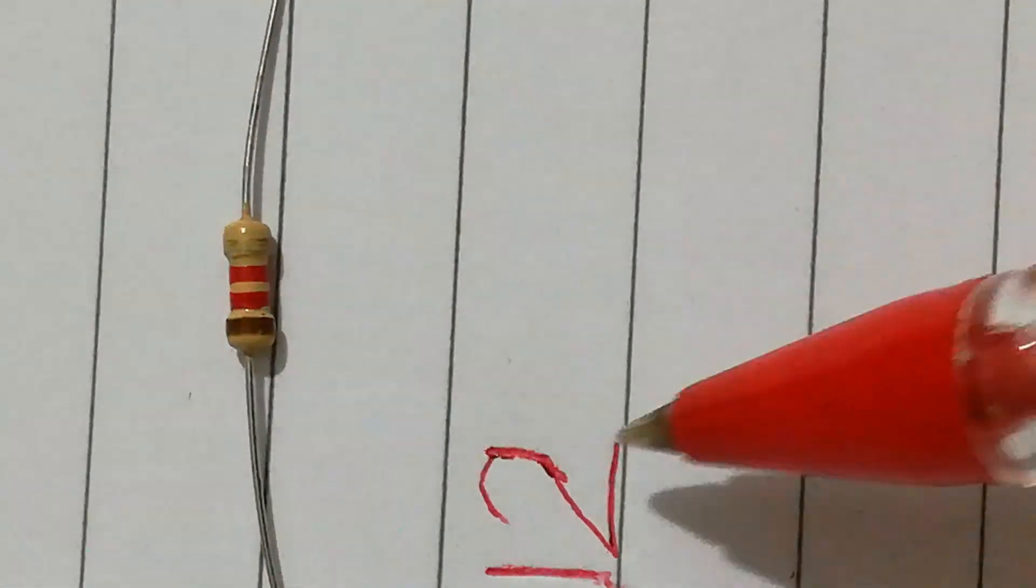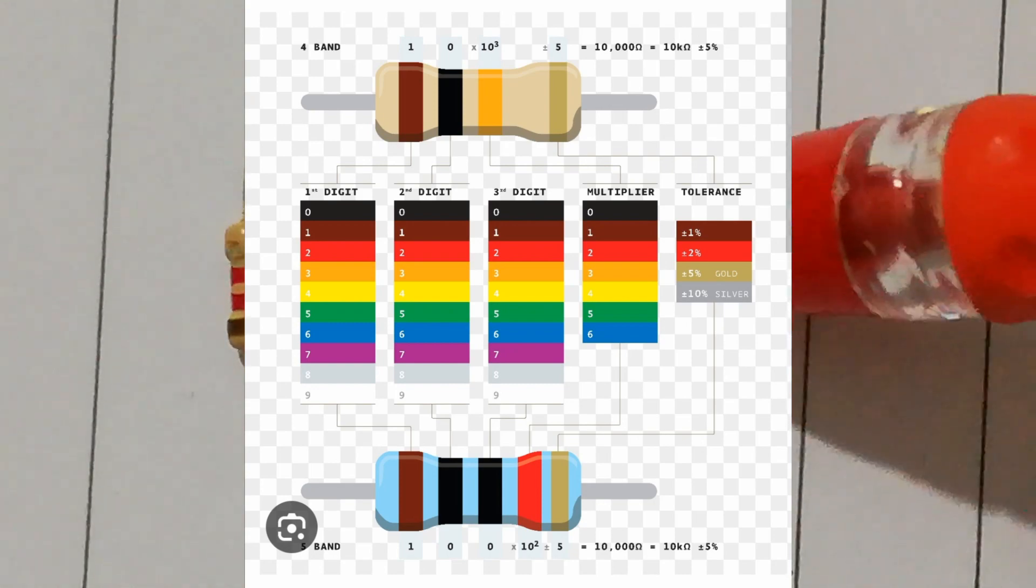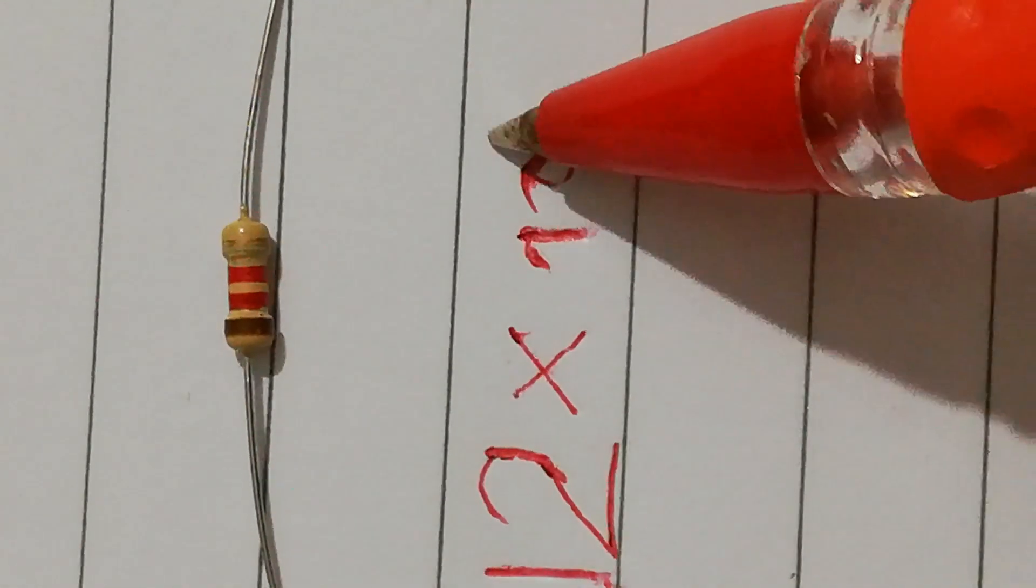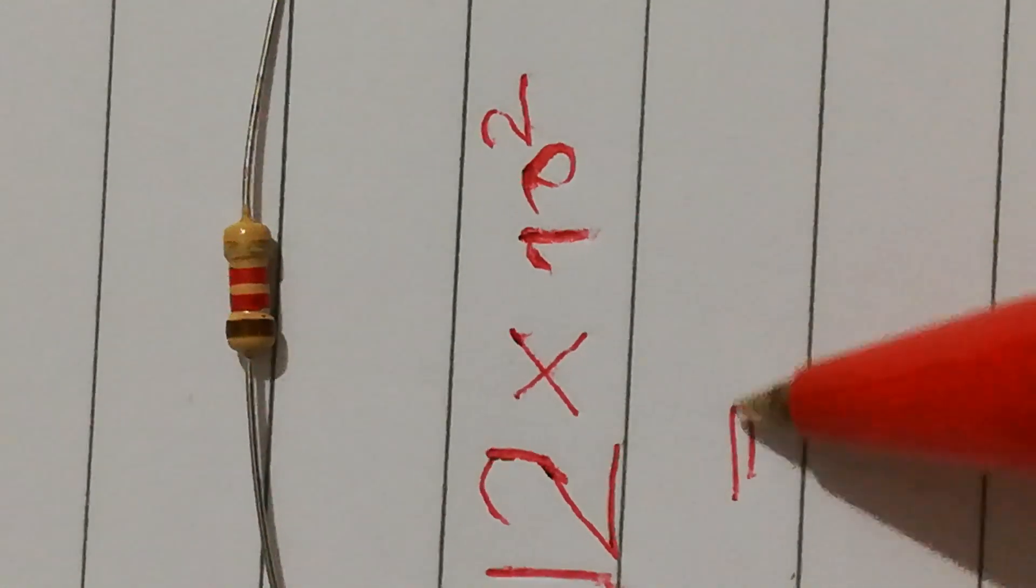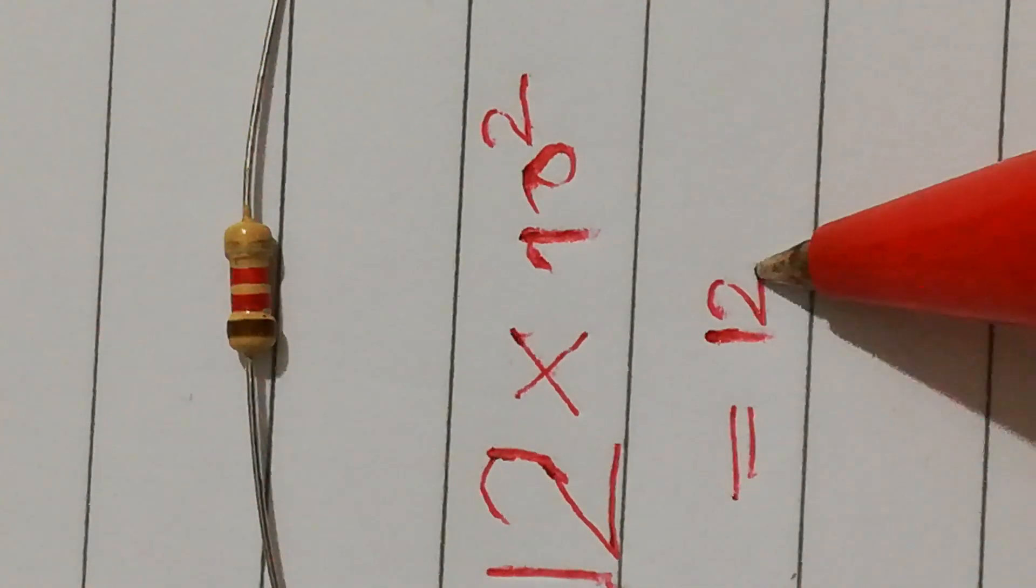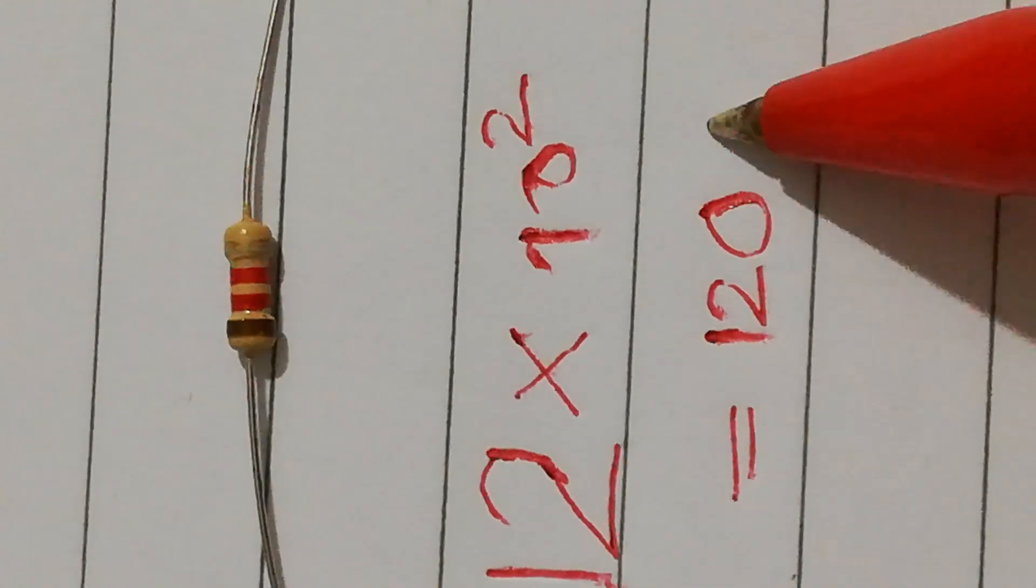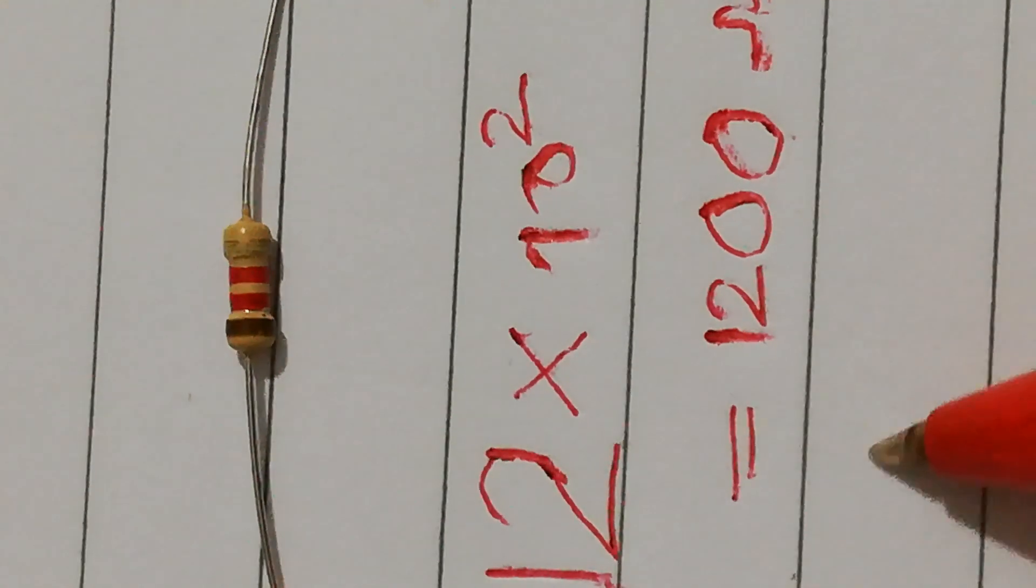And the third color is red. So the third color red is called as multiplier and the value of it is 10 to the power 2, which is 100. So the total value of this resistor in ohms would be 1200 ohms.